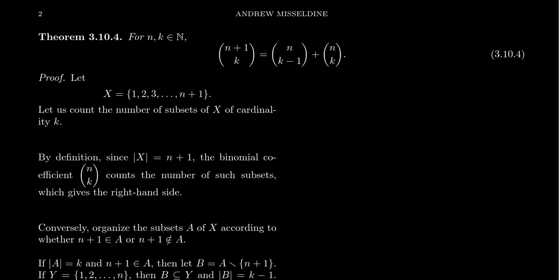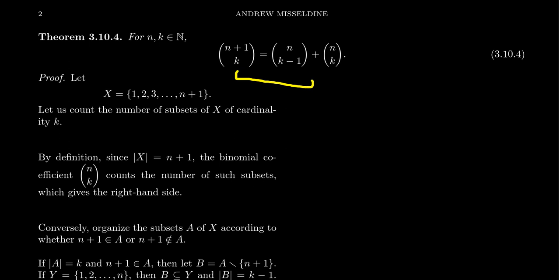We're going to prove this identity using the combinatorial proof method. For two natural numbers n and k, I claim that the binomial coefficient n plus one choose k is the same as the sum n choose k minus one plus n choose k. We don't need a formula to prove this — we'll prove it by counting the same collection of things in two different ways. This is a formula-independent proof. If you try to do this with formulas, it gets messy and awkward, and your proof will basically feel like a trig identity — you can prove it's true, but it obscures why it's true.